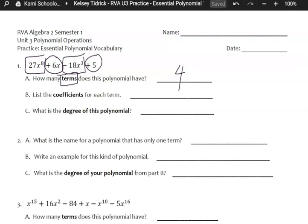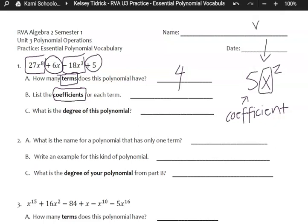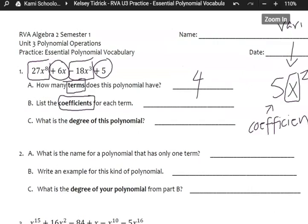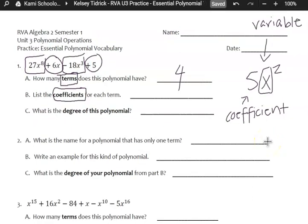List the coefficients for each term. So coefficients are the big number in front of the variable. So we have, so if I did like 5x squared, 5 is that coefficient. x is your variable. And this little 2 right here, that is your exponent, or the power that it's raised to.